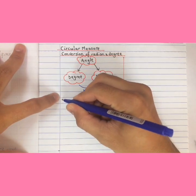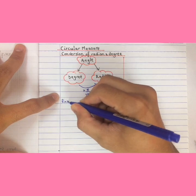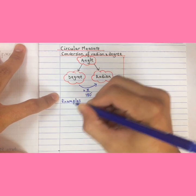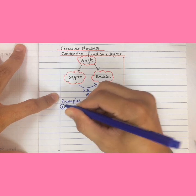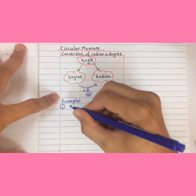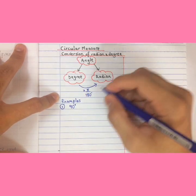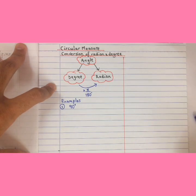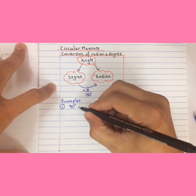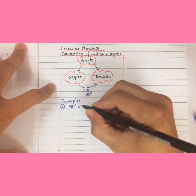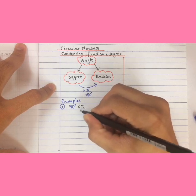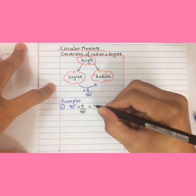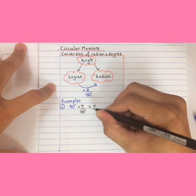For example, if you want to convert 90 degrees to radian, the way to do it is to times pi and then divide by 180. So you times pi over 180, and you will get pi over 2 radian.